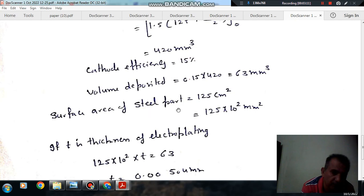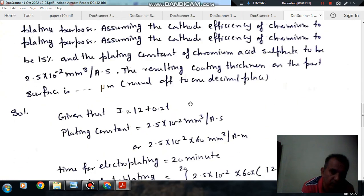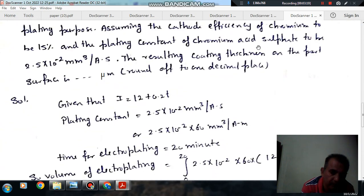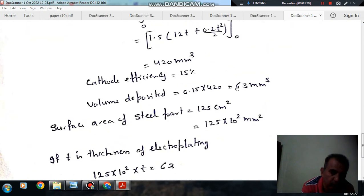And now surface area of the steel part is given as 125 cm squared. Surface area in mm squared will be 12,500 mm squared.